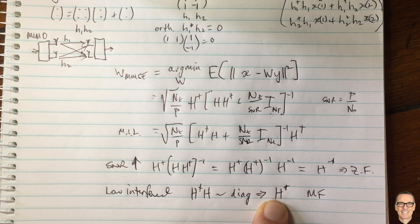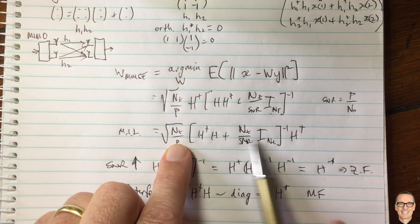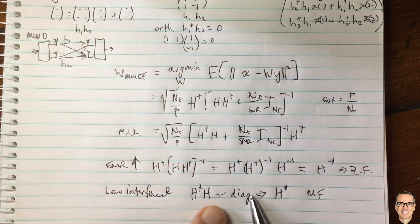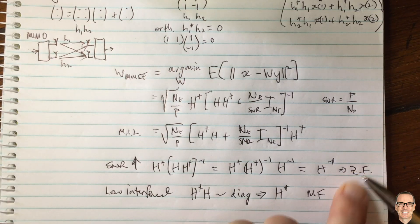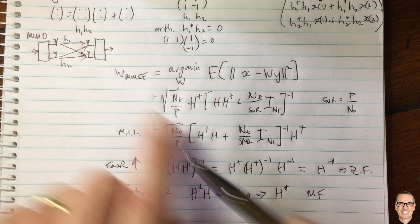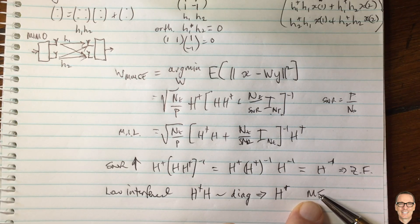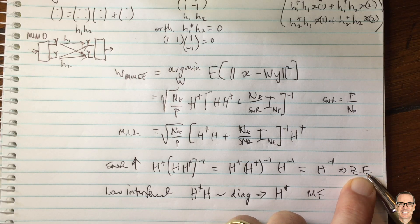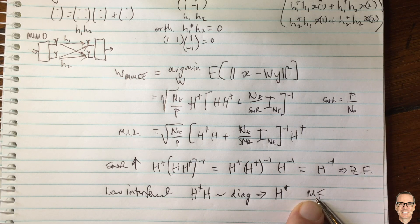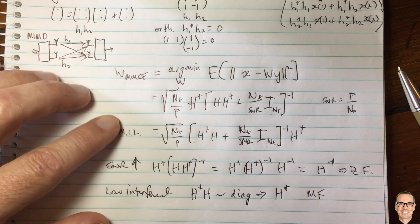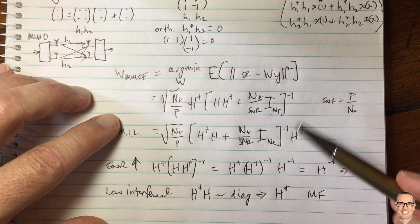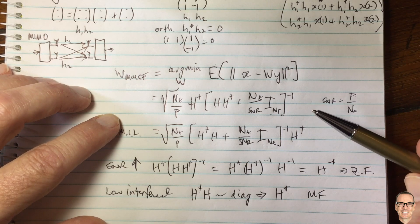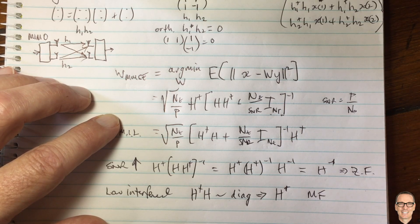Hopefully this has given you a lot of insight into the relationship between the MMSE filter, the zero forcing filter, and the matched filter, and how the MMSE gives you a trade-off between the two — avoiding the noise enhancement problem of zero forcing and the interference problem of the matched filter. If this video was helpful, please give it a thumbs up, subscribe to the channel for more videos, and check out the links below for other videos and a full categorized list of videos on the channel.